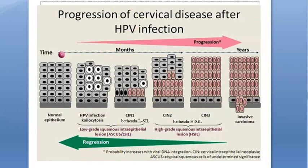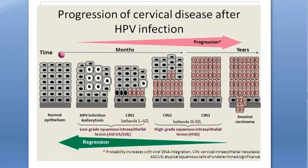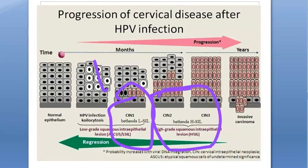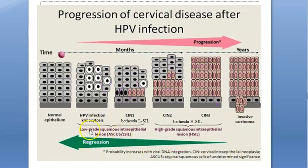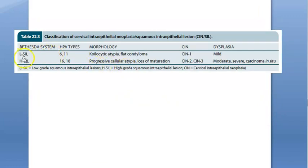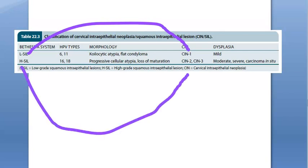They have written CIN1, CIN2, and CIN3. CIN1 is low grade, and CIN2 and CIN3 are high grade. So CIN1 is LSIL — low grade squamous intraepithelial lesion — and CIN2/CIN3 are HSIL — high grade squamous intraepithelial lesion. This is the Bethesda system of classification. Under LSIL you have CIN1, and under HSIL you have CIN2 and CIN3.